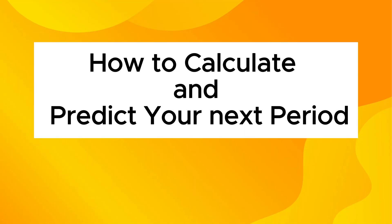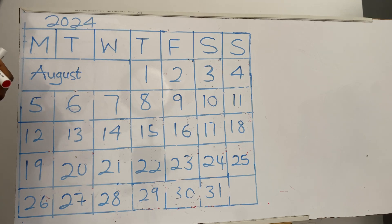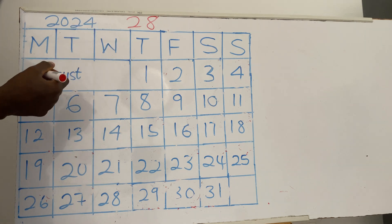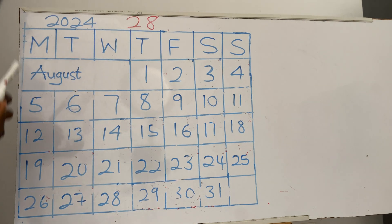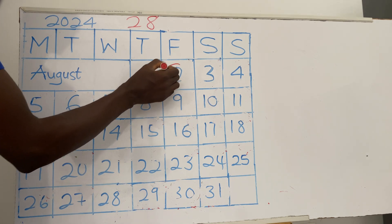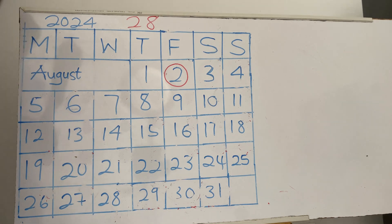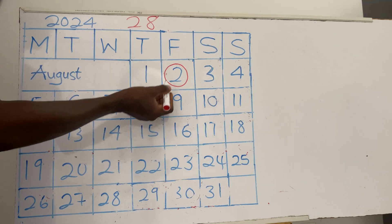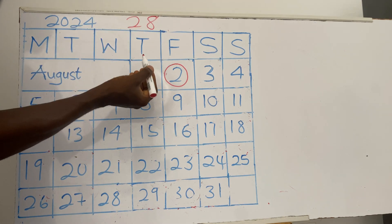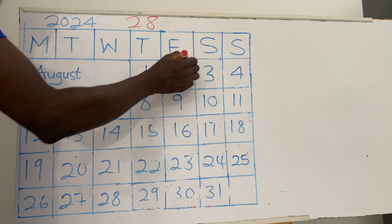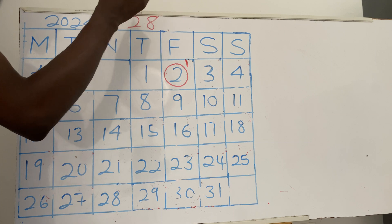Now, in order to predict the next time you have your period, you need to know your cycle length. Let's say someone has a cycle length of 28 days. If you have a 28-day cycle length and you want to know the next time you will menstruate, you first note the first day you menstruate. Let's say that first day is the 2nd of August — that day becomes day one of your period.